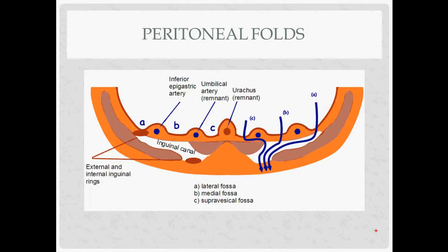In the abdomen, the peritoneum is the fascia we're talking about. There are five folds that are important to know — all travel up towards the belly button. The middle one is the urachus remnant, called the median ligament or median fold. Lateral to that are the umbilical artery remnants, which make the medial ligaments. Then lateral to the medial ligaments is the lateral fold, underneath which are the inferior epigastric arteries.